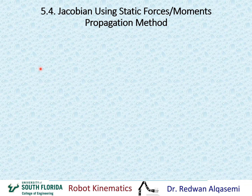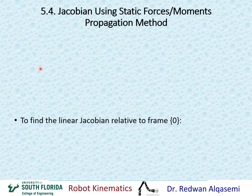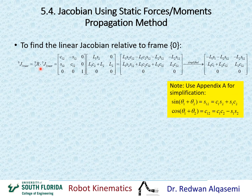This method finds the Jacobian relative to frame N, which is frame 3 in this case. To find the Jacobian relative to frame 0, we pre-multiply by the rotation matrix R(3→0). Plugging in the matrices gives a 3×2 linear Jacobian relative to frame 0. We can then simplify this result using trigonometric identities from Appendix A, yielding a simplified 3×2 linear Jacobian.